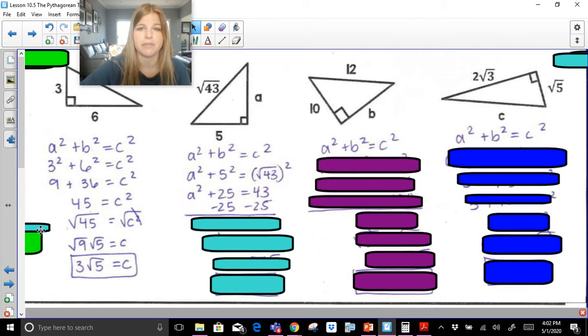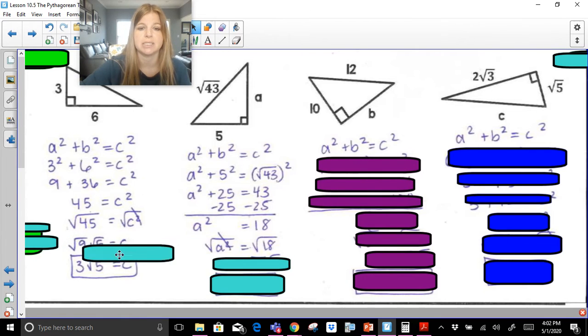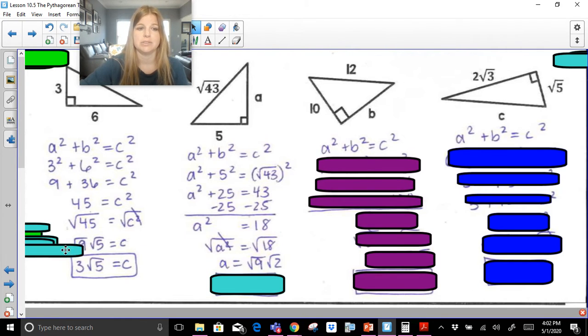We're going to subtract 25 on both sides to get A squared equals 18. We know the opposite of squaring something is to take the square root, and now radical 18. Biggest perfect square that goes into 18 is 9. This becomes radical 9, radical 2, which is really just 3 radical 2.